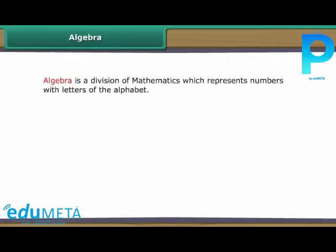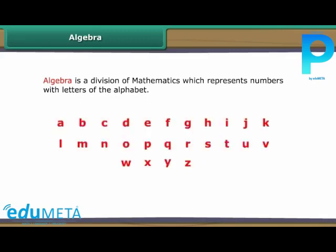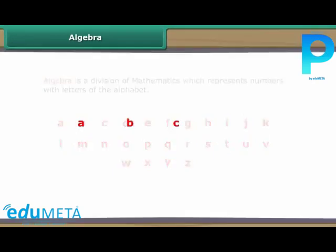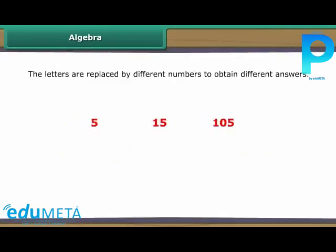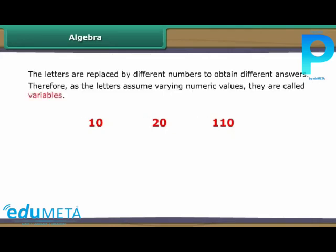Algebra is a division of mathematics which represents numbers with letters of the alphabet. The letters are replaced by different numbers to obtain different answers. As the letters assume varying numeric values, they are called variables.